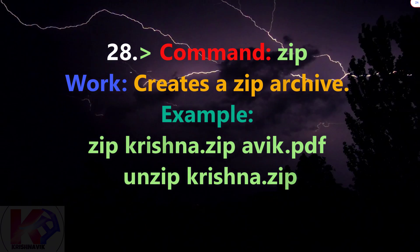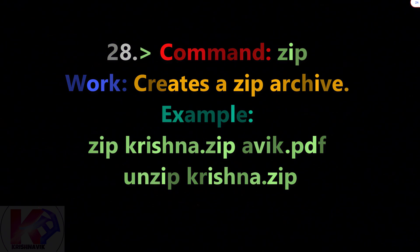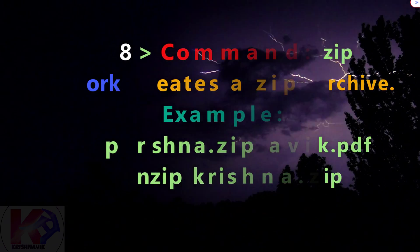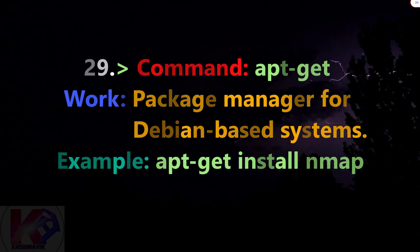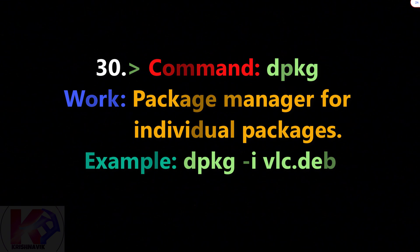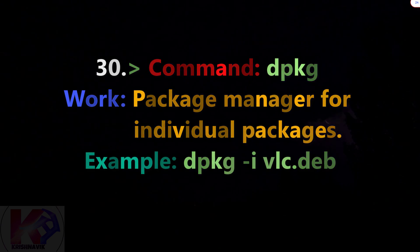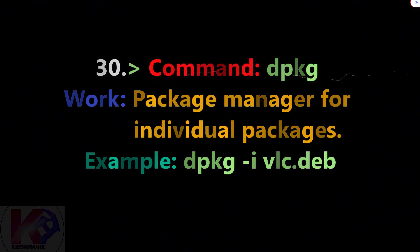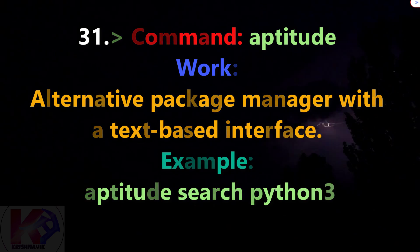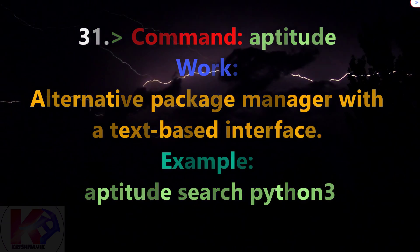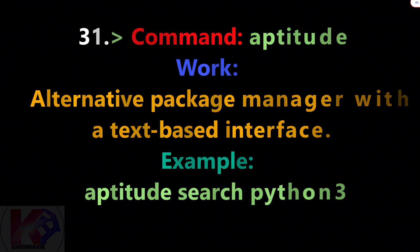Command zip: creates a zip archive. Example: zip archive.zip files, or unzip archive.zip. Command apt-get: package manager for Debian-based systems. Example: apt-get install package_name. Command dpkg: package manager for individual packages. Example: dpkg -i package.deb. Command aptitude: alternative package manager with a text-based interface. Example: aptitude search package_name.